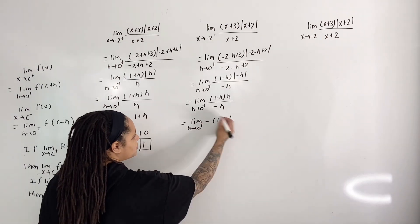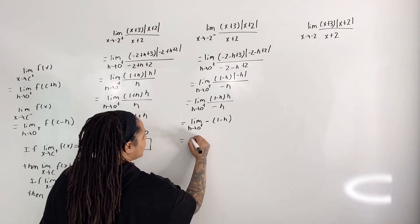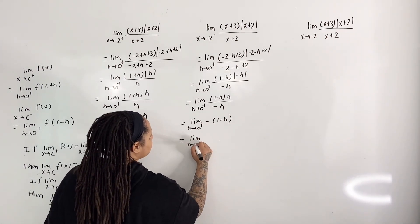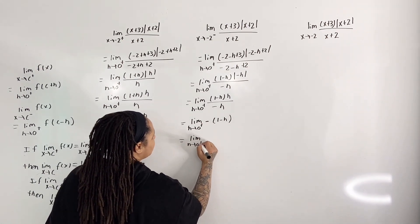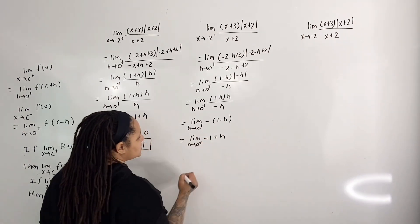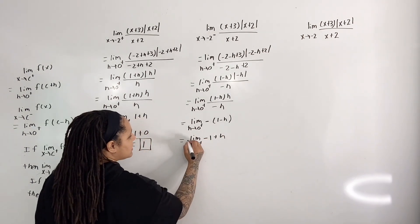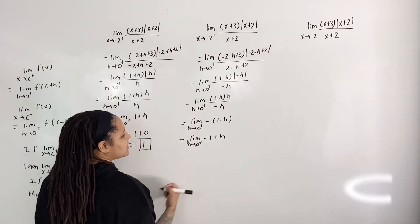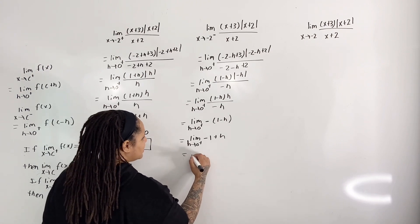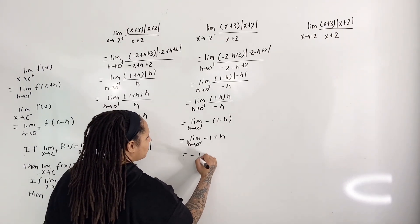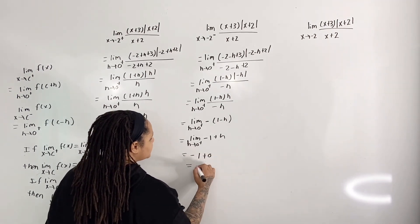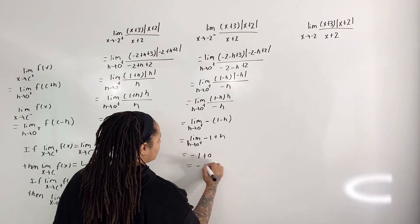Distributing the negative sign, we have the limit as h approaches 0 from the right of negative 1 plus h. Plugging in 0 for h, we get negative 1 plus 0, which equals negative 1.